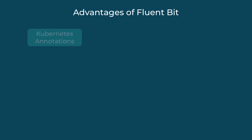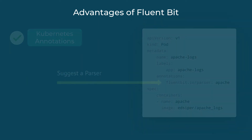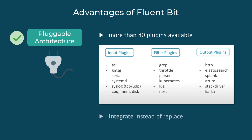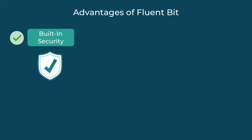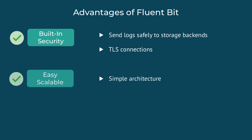A cool feature of FluentBit is that we can suggest which parsers to be used on pods using annotations in Kubernetes configuration files. FluentBit has a pluggable architecture — as a log collector, it doesn't try to replace the data sources like Systemd or Journald; instead, the goal is to integrate with different data sources. It also has built-in security: when you are sending logs from the cluster out to the storage backends, you're talking to third party services outside your cluster, so you don't want your logs sent in plain text — you can use HTTPS or TLS for that connection. And it has a simple architecture which makes it easy to scale FluentBit on hundreds of servers, since FluentBit will run on each node in the cluster.